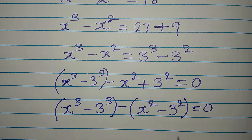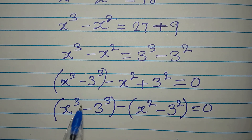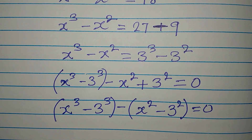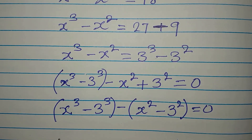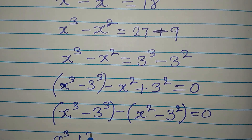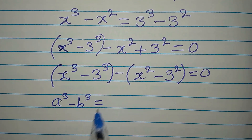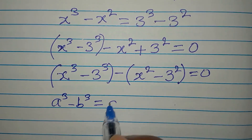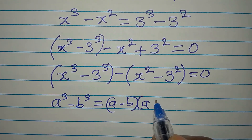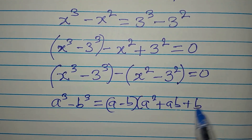We can now work with this using the difference of two cubes identity. If you have a to the power of 3 minus b to the power of 3, this equals a minus b, times a squared plus ab plus b squared.